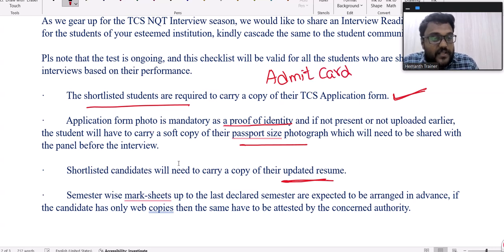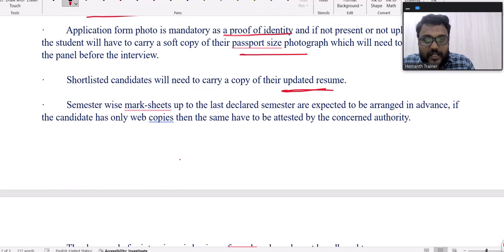Semester wise mark sheets up to the last declared one. Suppose some are in seventh semester, some have completed but are waiting for last semester results - whatever it may be, up to four semesters at least. Take the printout and get it attested.